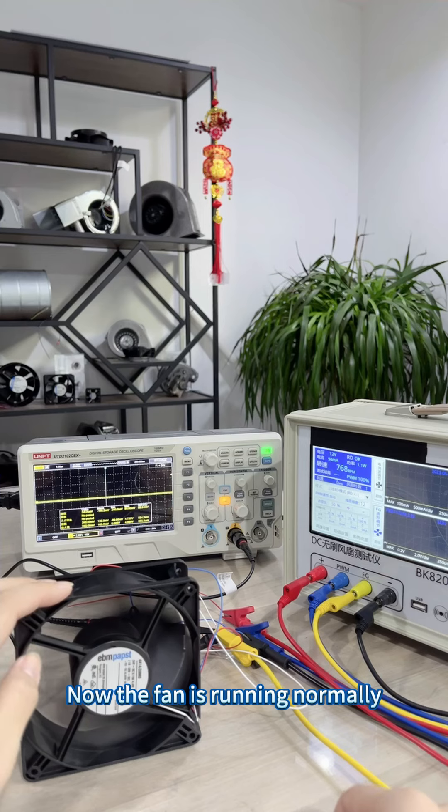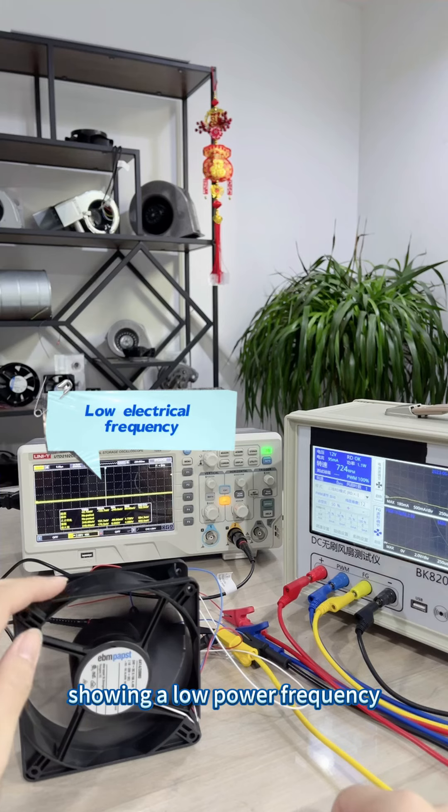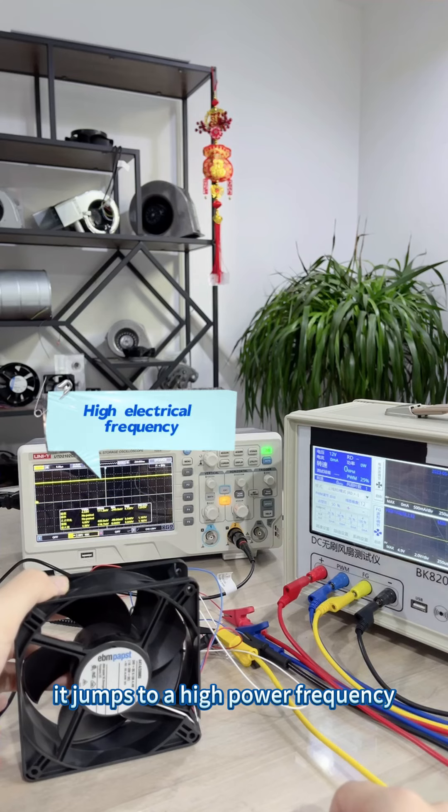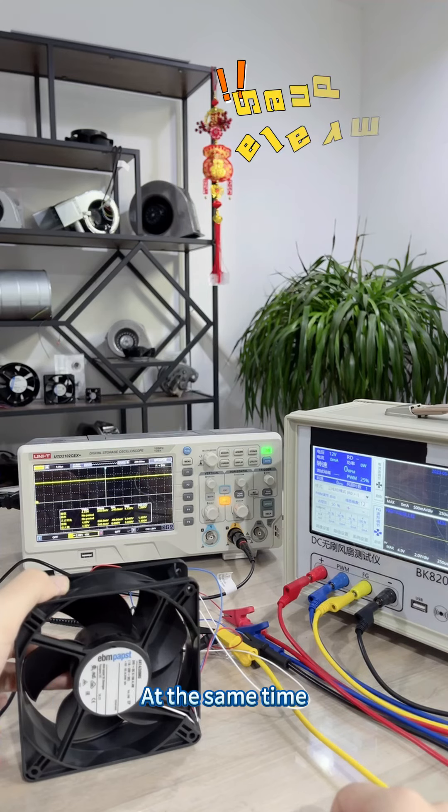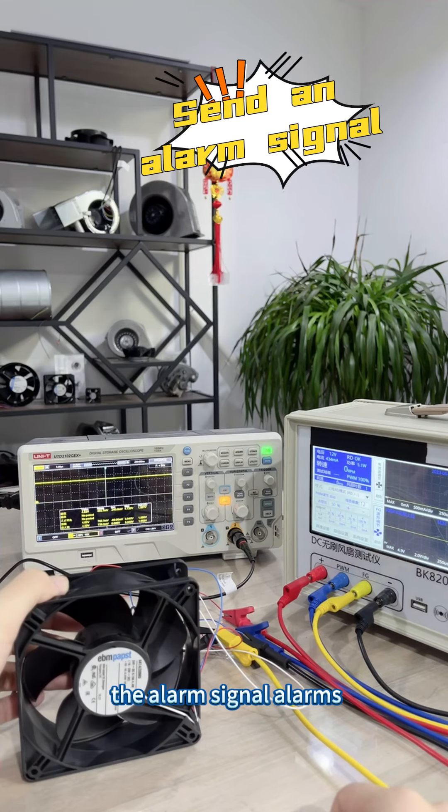Now the fan is running normally, showing a low power frequency. When the fan is stopped, it jumps to a high power frequency. At the same time, the alarm signal activates.